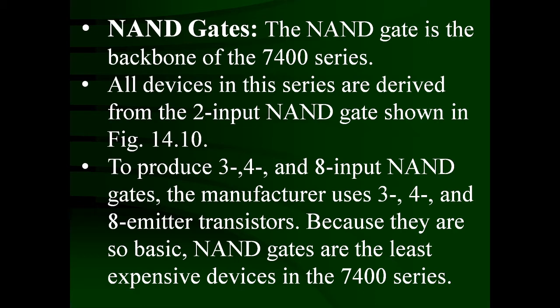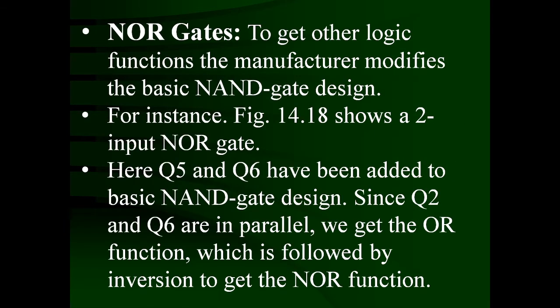How can they be fabricated? In a standard TTL NAND gate, the key element is the multi-emitter transistor Q1. The number of inputs is increased by increasing the number of emitters — 2 emitters means 2 inputs, 3 emitters means 3 inputs, 4 emitters means 4 inputs. A maximum of 8 PN junction diodes can be accommodated in Q1, so an 8-input NAND gate is possible.